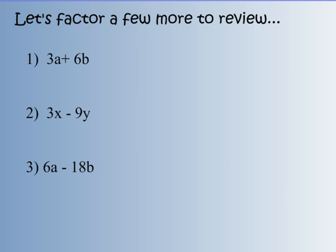Let's factor a few more. What do 3a and 6b have in common? They don't have a and b in common, but they do have a factor of 3 in common. So if you divide each of the terms by 3 — 3 divided by 3 gives me 1a, 6 divided by 3 gives me 2b. Put parentheses around that. The common factor goes out in front. 3 times the quantity a plus 2b is the factored form of 3a plus 6b.